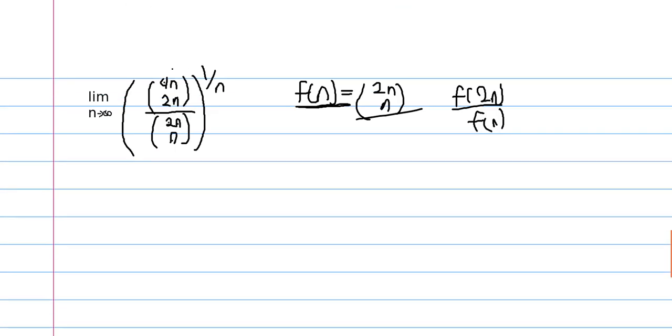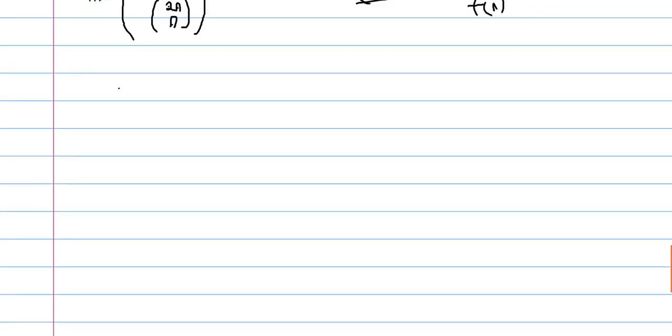So 2n choose n is equal to 2n factorial divided by n factorial squared. And so we can use Sterling's approximation.